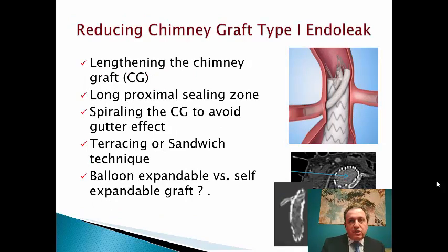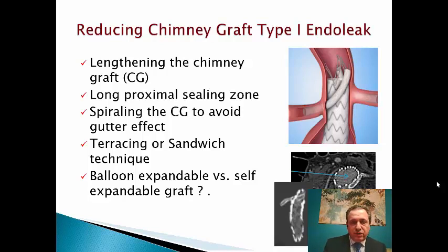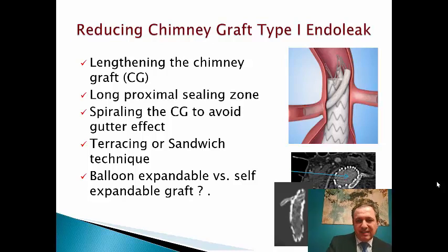The main problem with chimney is type 1 endoleak. How can we decrease that? By linking the chimney graft, by having a long proximal sealing zone, by spiraling the covered stent, and by using sandwich technique if you use three or four chimneys. The question of whether to use balloon or self-expandable stent is controversial, but in general, if you use Medtronic, it's better to use V12 balloon-expandable stent. If you use Gore, it's better to use Viabahn self-expandable covered stent — but don't forget to put a bare metal stent inside it to give it more stiffness.